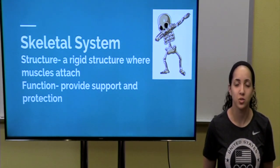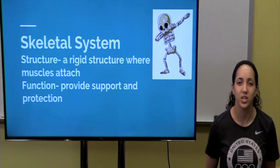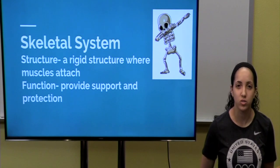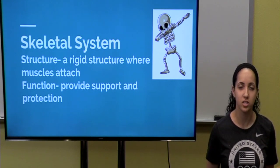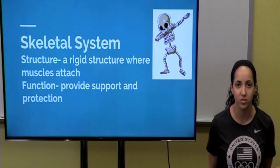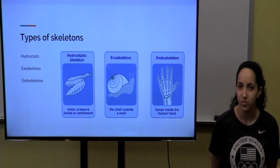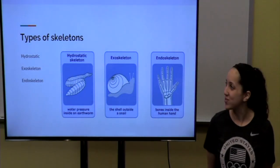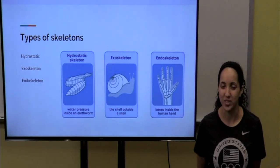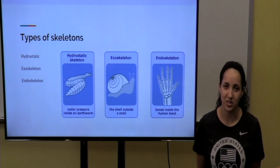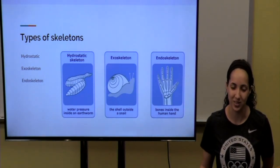Now let's take a closer look at the skeletal system. The skeletal system has a structure that is rigid, and it functions as the support and protection for the body. There are three types of skeletons. The first type is hydrostatic, the second type is exoskeleton, and the third type is endoskeleton.